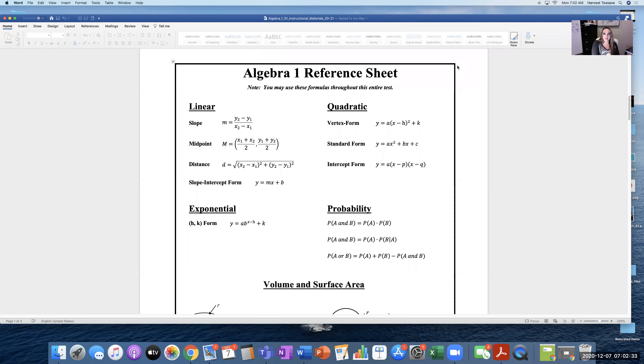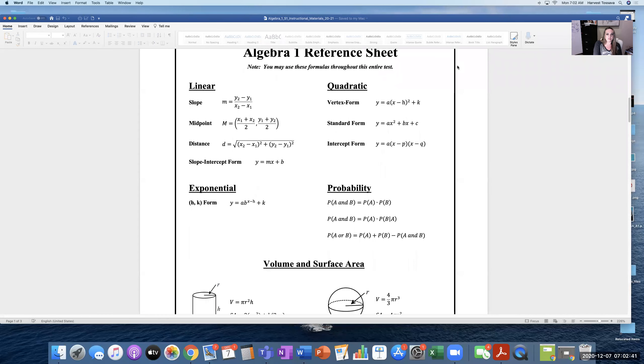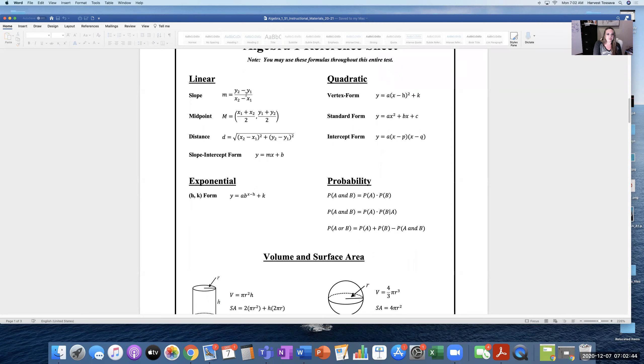What you're looking at right now is the reference sheet that everyone will have access to for the final. So as you can see, this is a formula sheet. It gives you the formula for finding slope. This, we have not done.